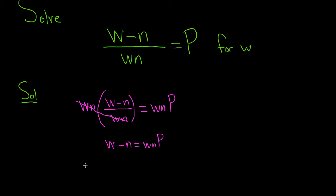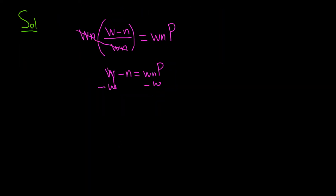And we're looking for W. So in order to find it, we need to get all of the terms that have W on one side by themselves. So let's go ahead and subtract the W from both sides — minus W, minus W. That gives us negative N equals WNP minus W.